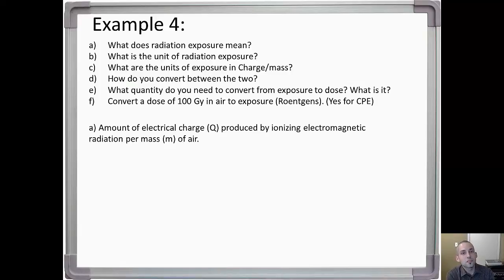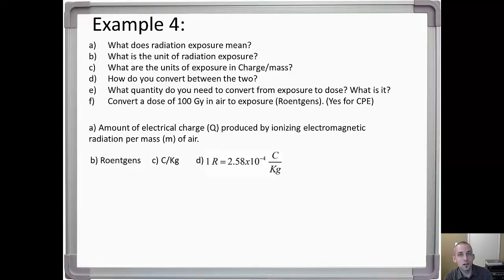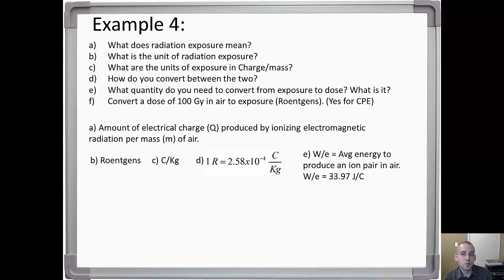Another important conversion to remember: one roentgen equals 2.58 times 10 to the negative 4 coulombs per kilogram. To convert from exposure to dose, you need an additional quantity called W-bar over e — the average energy to produce an ion pair in air — which has units of joules per coulomb, with a value of 33.97 joules per coulomb in air. This value changes if you're in a different material.